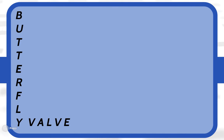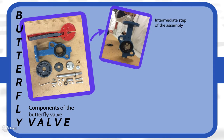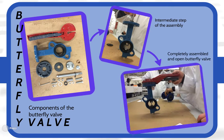The butterfly valve is a compact and light valve that has a quick on and off system with a quarter-turn rotation. This valve has a low pressure drop and a high pressure recovery, which is used mainly in slurry services, cooling water and fire protection.